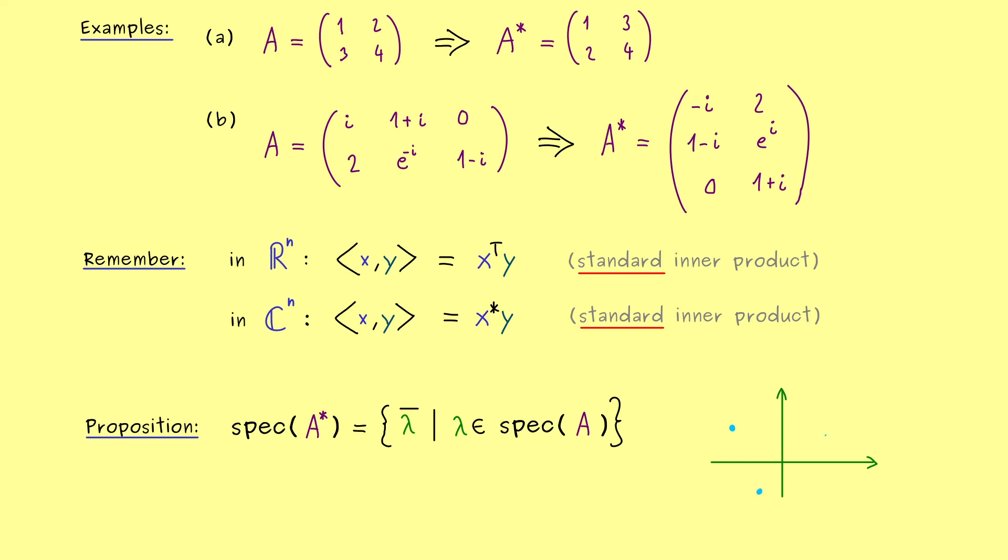So on the complex plane, this means if these are the eigenvalues of A, then, reflected with respect to the real axis here, you find the eigenvalues of A star. In particular, they definitely share eigenvalues on the real axis here. In fact, it's not hard to prove this equation here, because you already know the eigenvalues are the zeros of the characteristic polynomial.